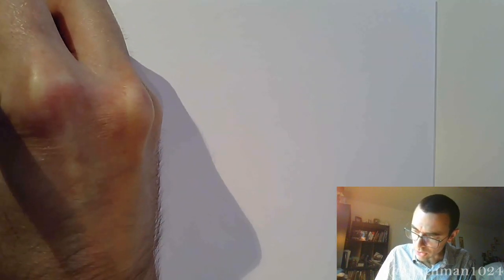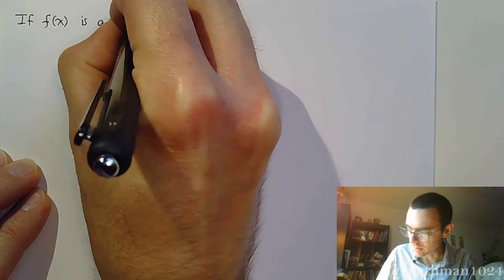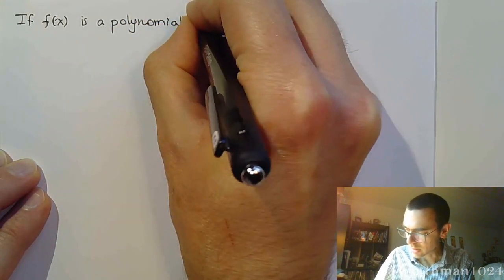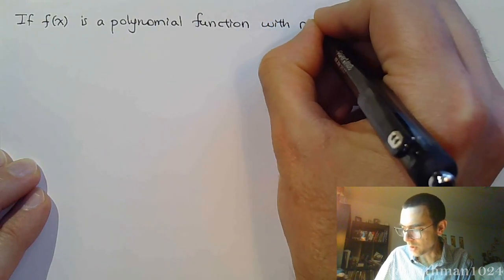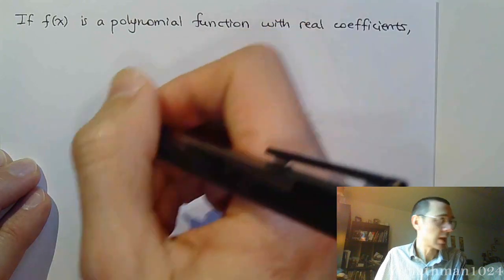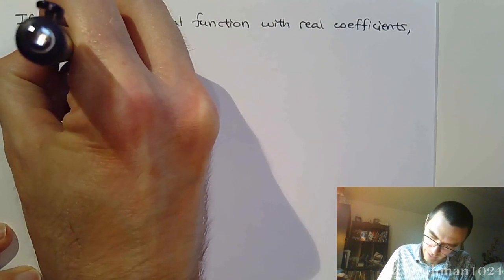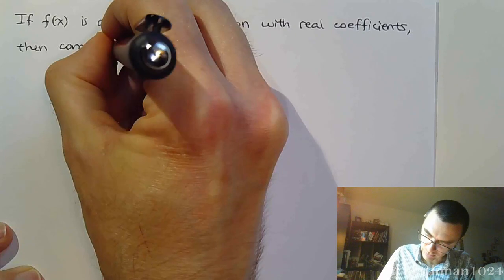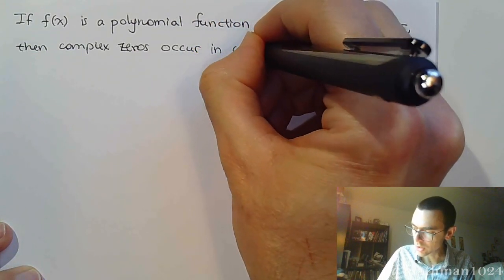And that's what we tend to see with irrational and complex solutions. In particular, we want to focus on those complex solutions. And here's what we need to know. If f(x) is a polynomial function with real coefficients, then complex zeros occur in what we call conjugate pairs.